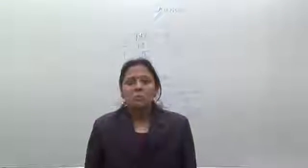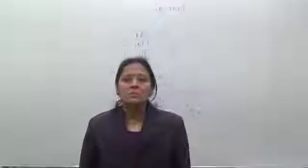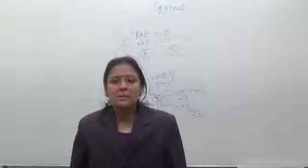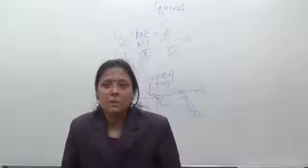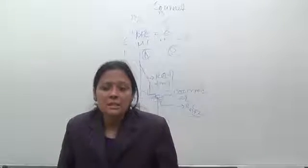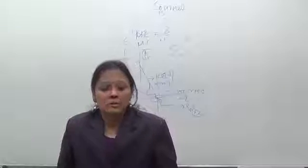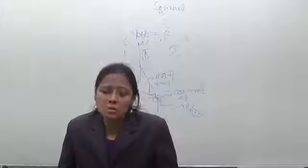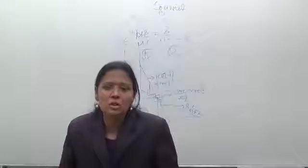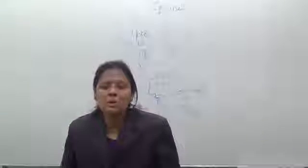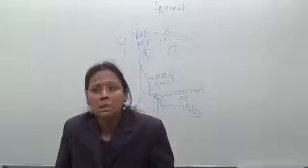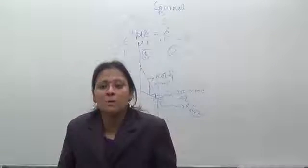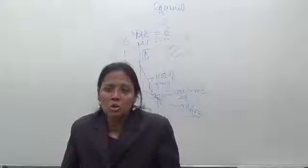Hello, I'm Dr. Mohua Bhattacharji from MIT School of Economics. Today we'll be taking the Stackelberg model as we have extended it. We have done the Cournot model and then after the Cournot model we have understood the reaction curve, which is a slight modification. Now we will see how Stackelberg used the reaction curve to explain the profit-maximizing situation.